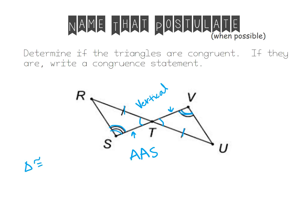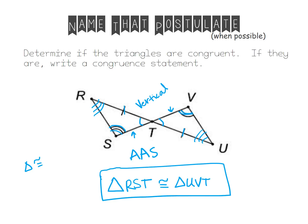Since the triangles are congruent, I need to write a congruency statement. Triangle RST is congruent to triangle — now I have to be careful. R is the angle congruent to U, so the first letter must be U. Then R has two arcs, so V comes next. And T would be the last one. So this would be my congruency statement: triangle RST is congruent to triangle UVT.